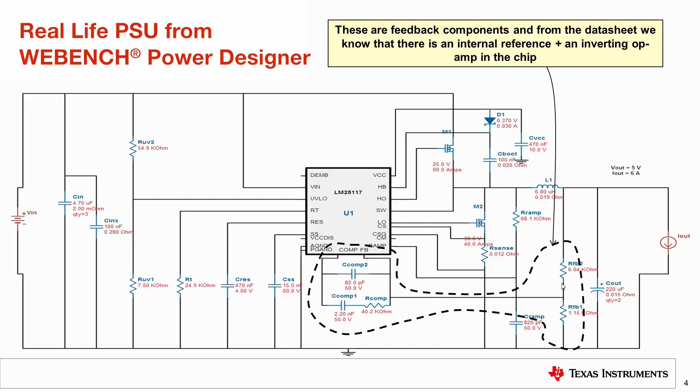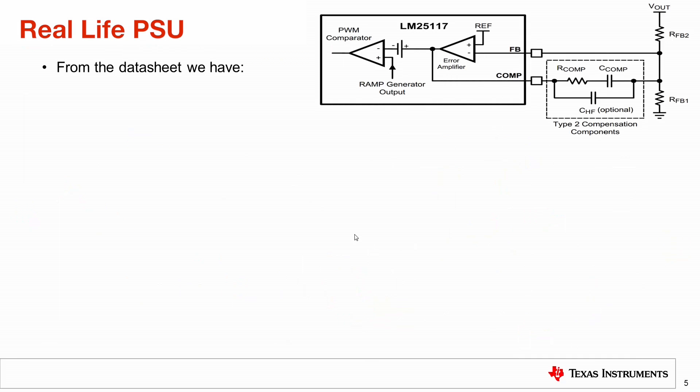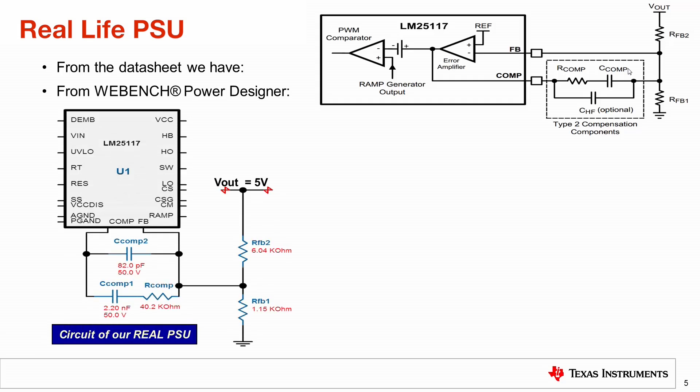So these feedback components are from the data sheet and we can have a look at what is inside of the chip and you'll find that it is the op-amp and the comparator that we showed from the textbook version. So from the data sheet of this LM255117 device I can see that I have got my PWM comparator and I have got my inverting op-amp and I have got these set of components. And you will see shortly that is exactly the same as the one that you study in your textbook. So WebBench Power Designer has designed for me a compensator and has connected it to these pins and these pins correlate perfectly well to these feedback pins and the compensator pins of the data sheet.